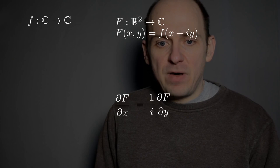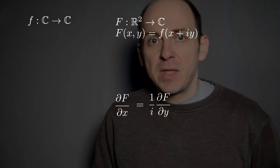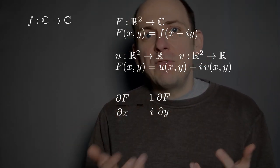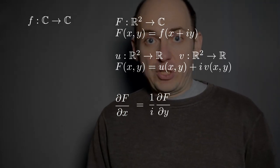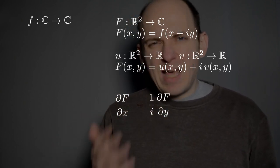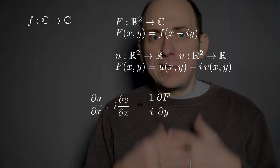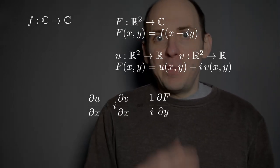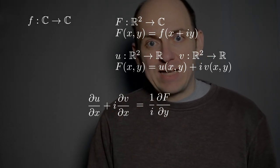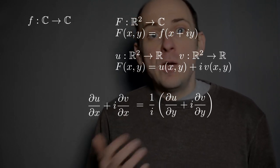To continue on the theme of separating out the real and imaginary parts of everything involved, let's introduce two more functions: u from ℝ² to ℝ and v from ℝ² to ℝ. We pull out the real and the imaginary outputs of big F (or little f), so big F(x, y) = u + iv. This lets us expand ∂F/∂x as ∂u/∂x + i·∂v/∂x, and similarly ∂F/∂y as ∂u/∂y + i·∂v/∂y.